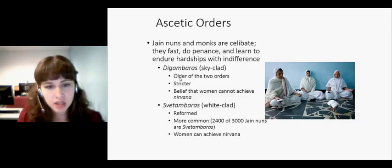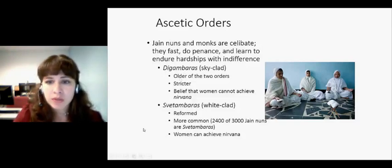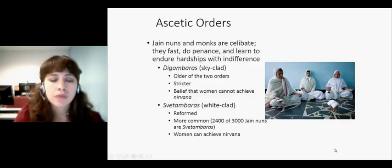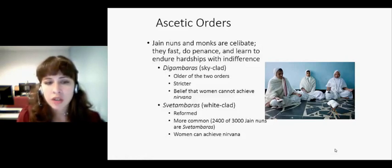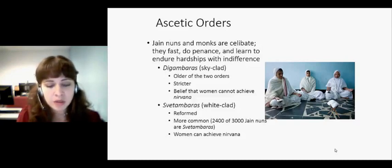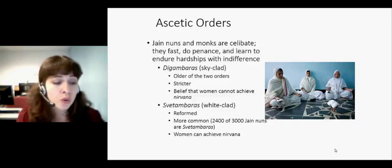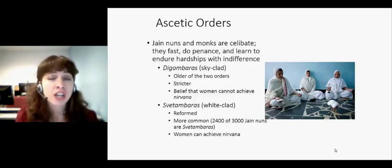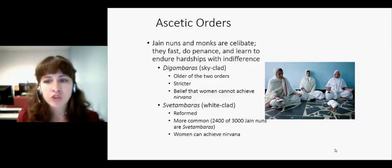The Shvetambaras are the white-clad. We have pictures of some Shvetambara nuns here — you can see they're meditating. The story goes that all the monks and nuns lived together in a region of India, and there was a famine. Some of them moved south to avoid the famine and some remained. When the ones who had left came back, they found that the members who had been left behind had changed many rules. So they reformed and changed certain things about the Jain monastic order, and they are the Shvetambaras.